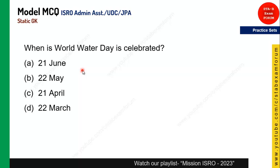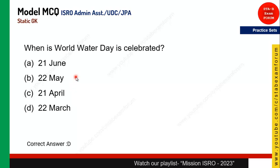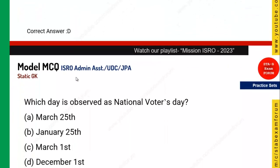Next question — when is World Water Day celebrated? Water is very important for our daily life, and World Water Day is observed to spread awareness about water safety. This is confusing for some students, but the answer is 22nd March. If you answered 22nd March, you are doing very well in static GK.